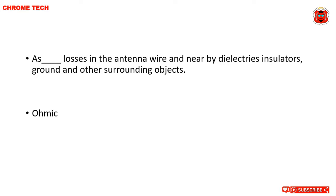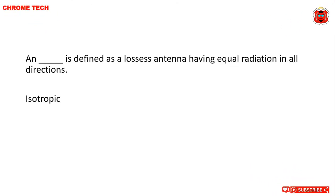Next: dash is defined as the lossless antenna having equal radiation in all directions. The correct answer is isotropic.